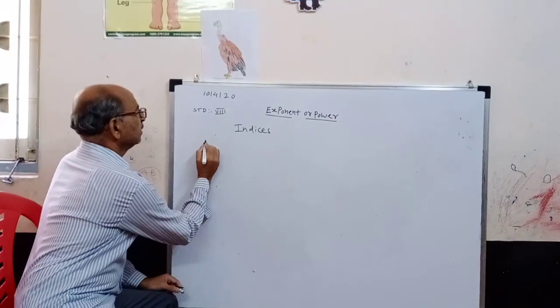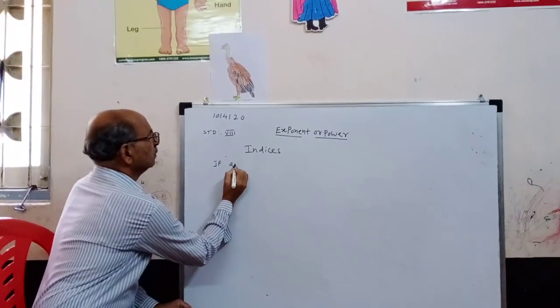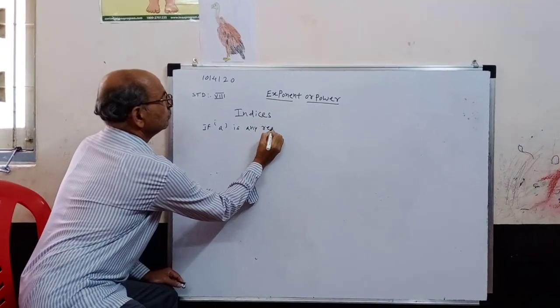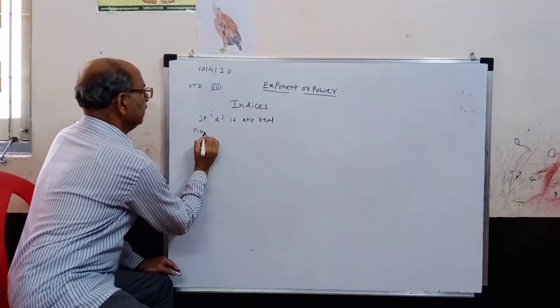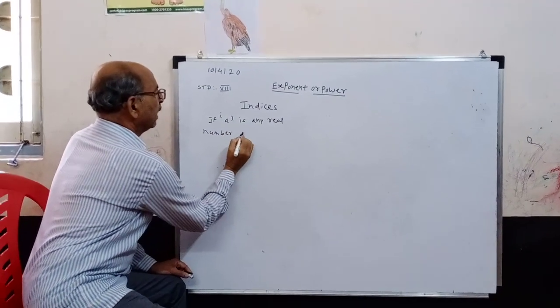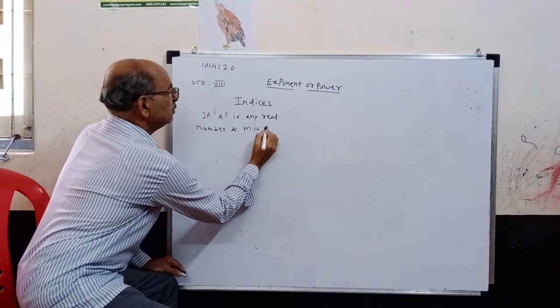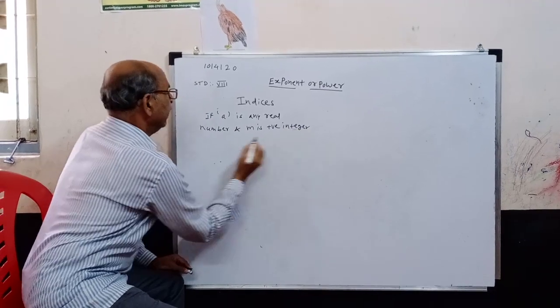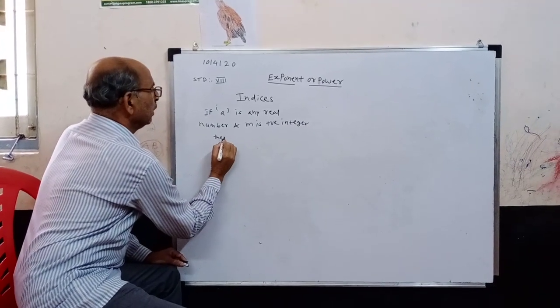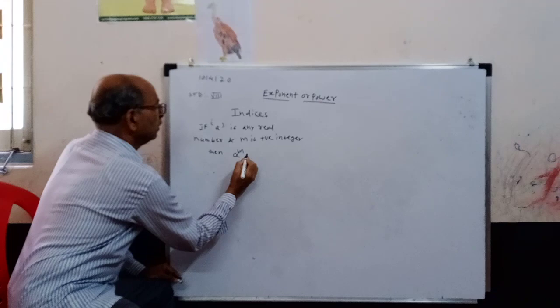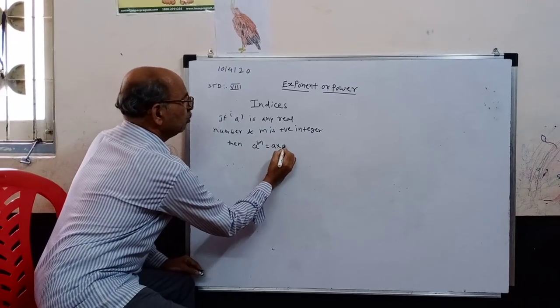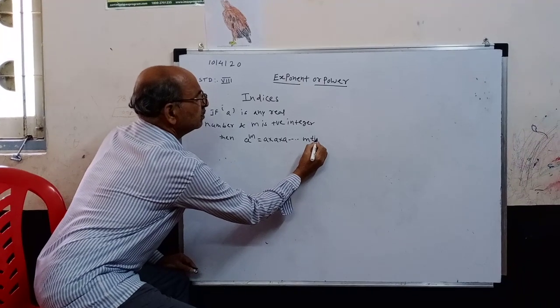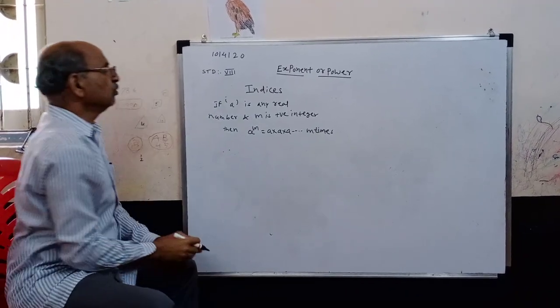If a is any real number and m is positive integer, then a raise to m is equal to a into a into a, m times. This is called as index.